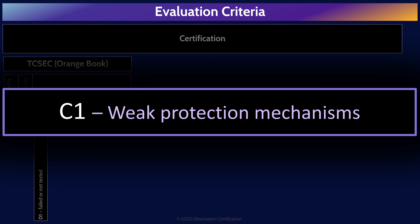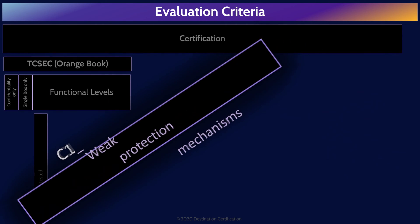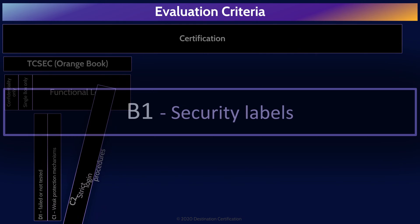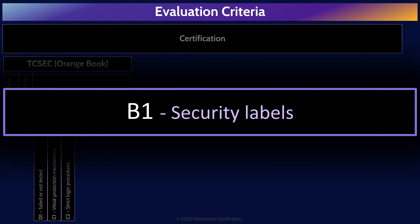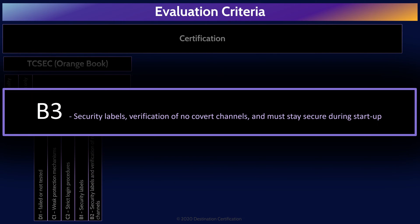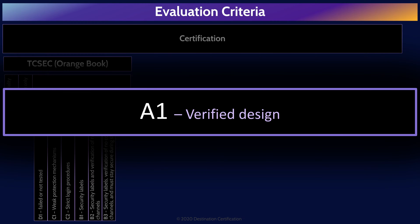Next up is C1, which means the product provides weak protection mechanisms. Next is C2, and each level builds on the previous — C2 adds that products provide strict login procedures. C2 is the most common rating for products. B1 is where labeling becomes a requirement — remember that: B1, labeling. B2 means products provide security labels and verification of no covert channels. B3 means products provide security labels, verification of no covert channels, and must stay secure during startup. And the highest possible rating is A1, verified design — so secure it is virtually unusable.